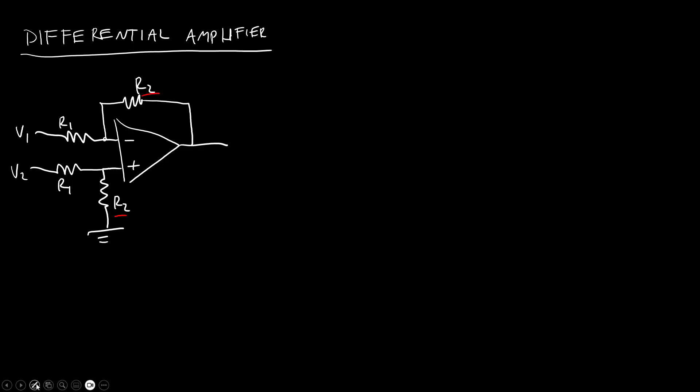...it is important that these resistor values are equal. You have R2 here and R1 here and then Vout over here. And if you analyze the circuit, which again I'm not going to do in detail in this video, you get Vout equals R2 over R1 times V2 minus V1. So we are amplifying this small difference between V2 and V1 by a factor R2 over R1.